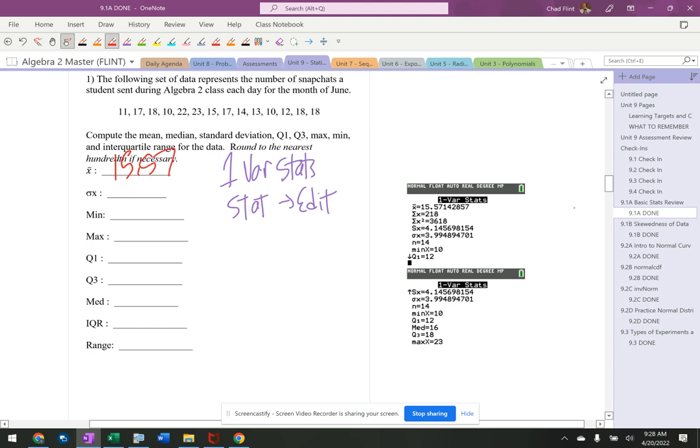Sigma, this is the standard deviation. All right, that is right there. So it's 3.99. All right, minimum is 10. Maximum is 23. These are all on the list. Q1 is 12. Q3 is 18. The median is 16.